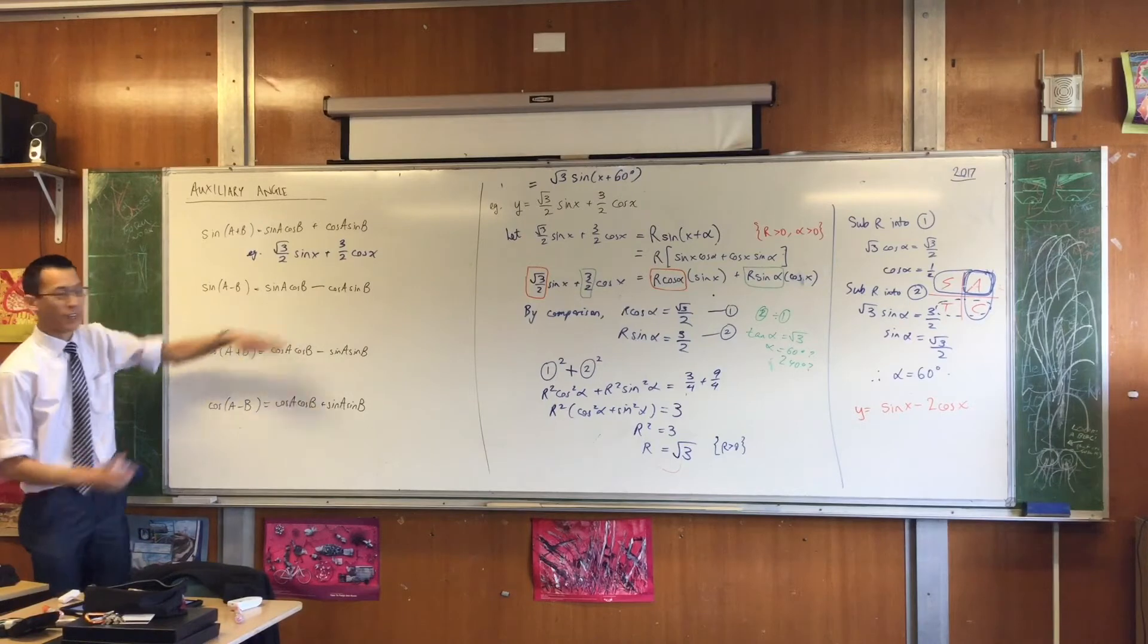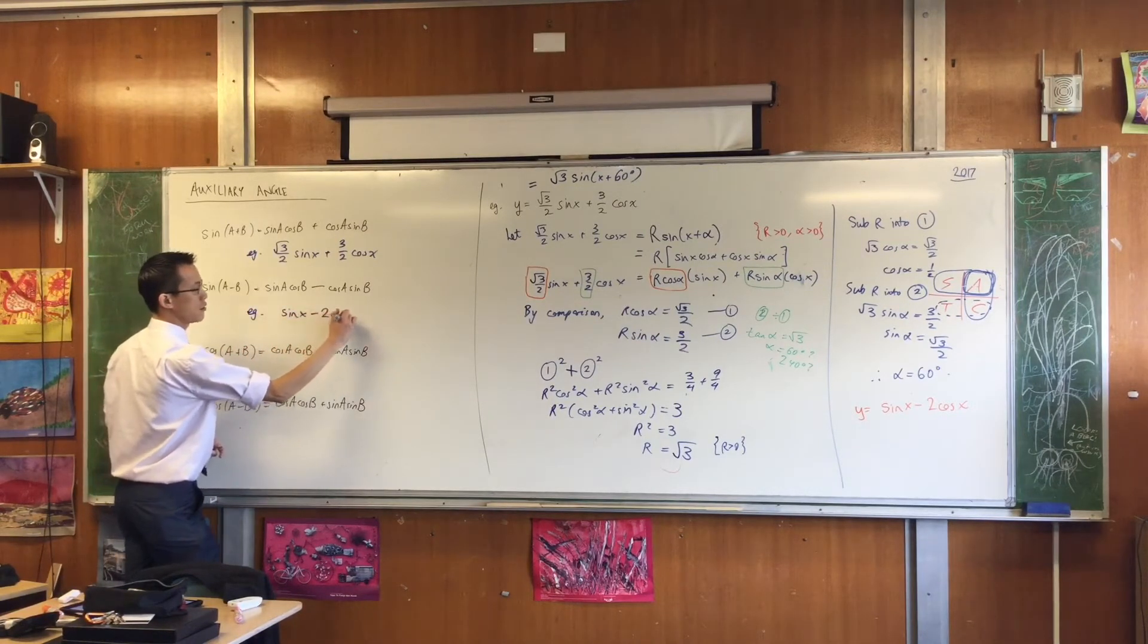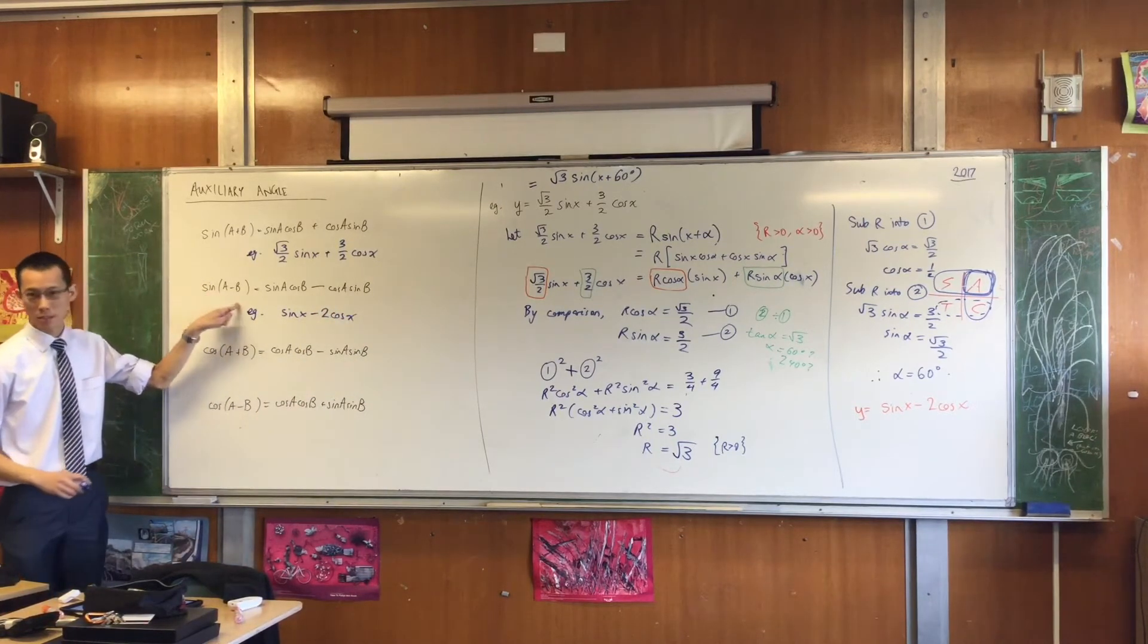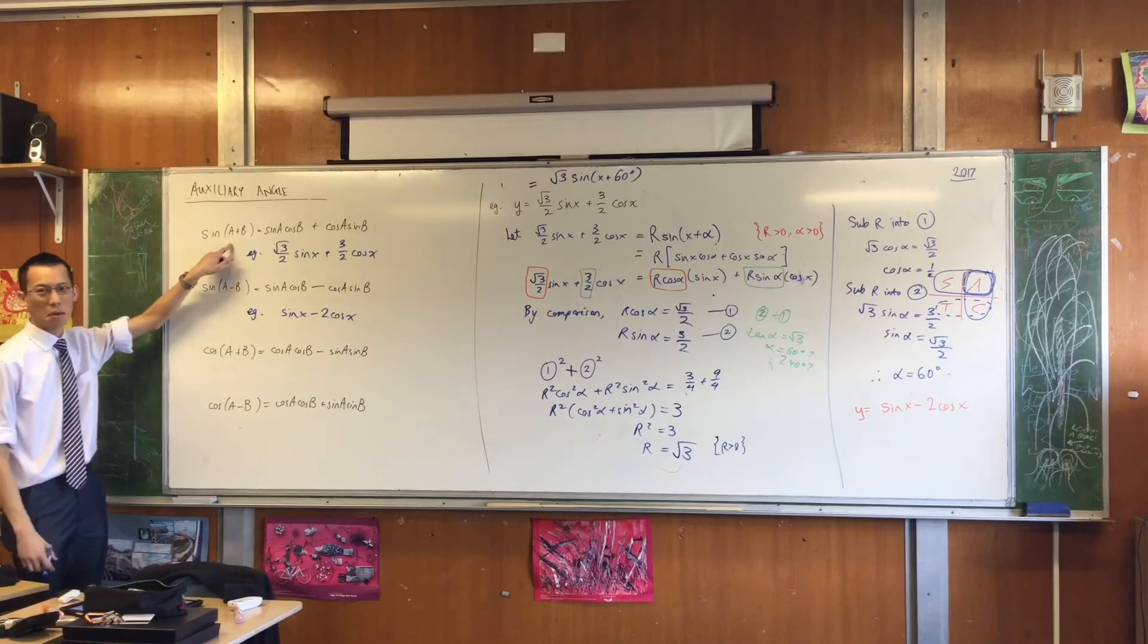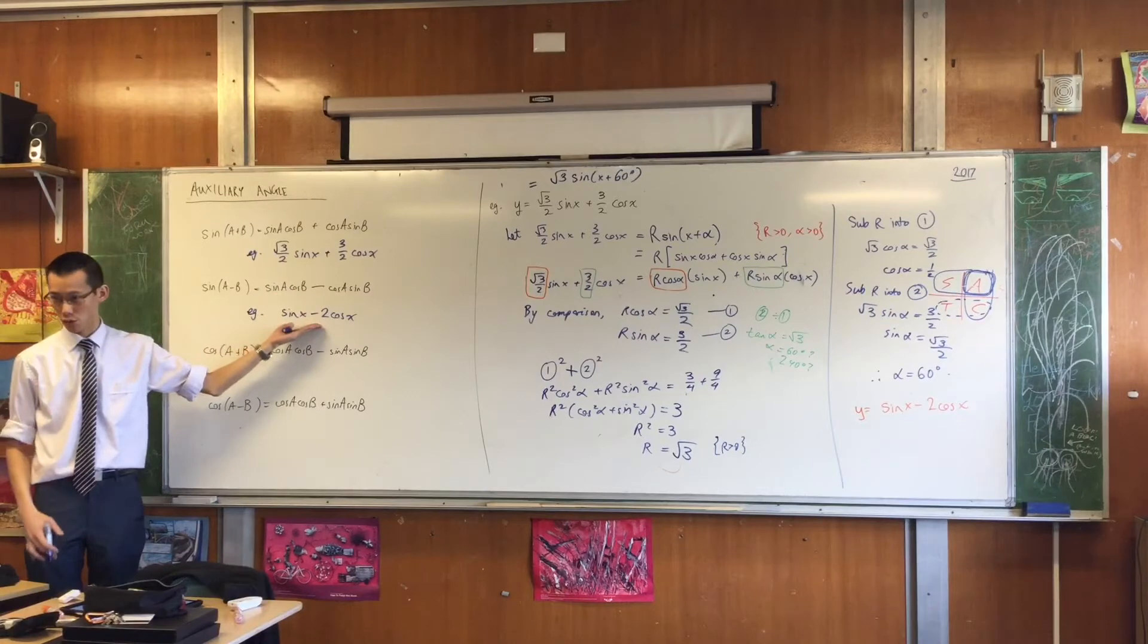So therefore, that would fit here. If I saw sine x minus 2 cos x, my brain would say, all right, try this one. You can try this one, but it's just going to be negatives where they don't belong. It's confusing. If you've got a negative, you might as well use it.